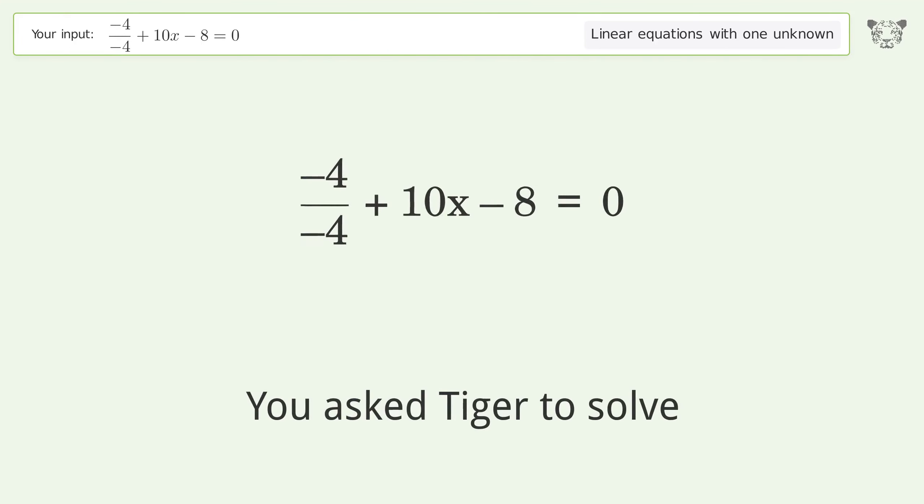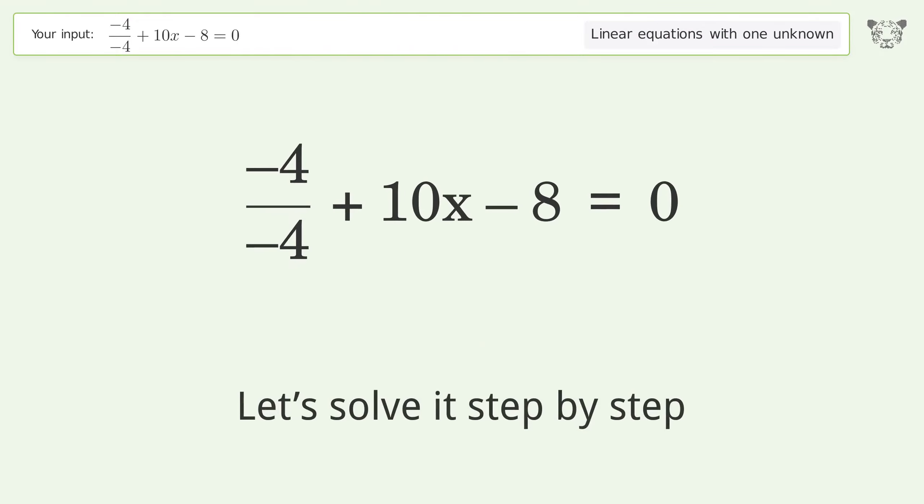You asked Tiger to solve this. It deals with linear equations with one unknown. The final result is x equals 7 over 10. Let's solve it step by step. Simplify the expression.